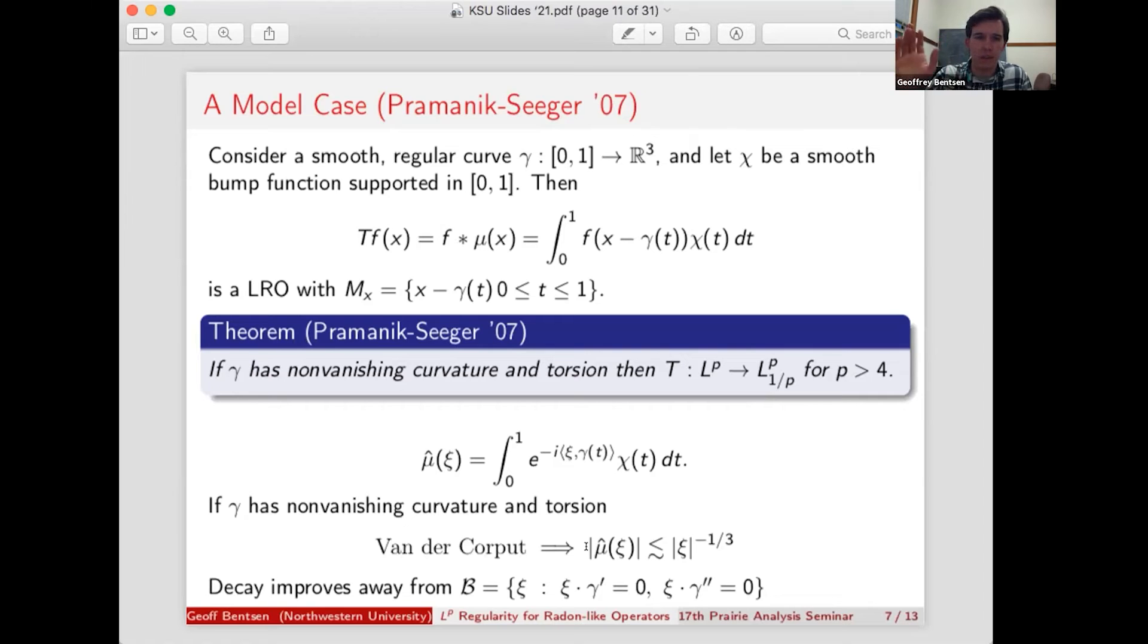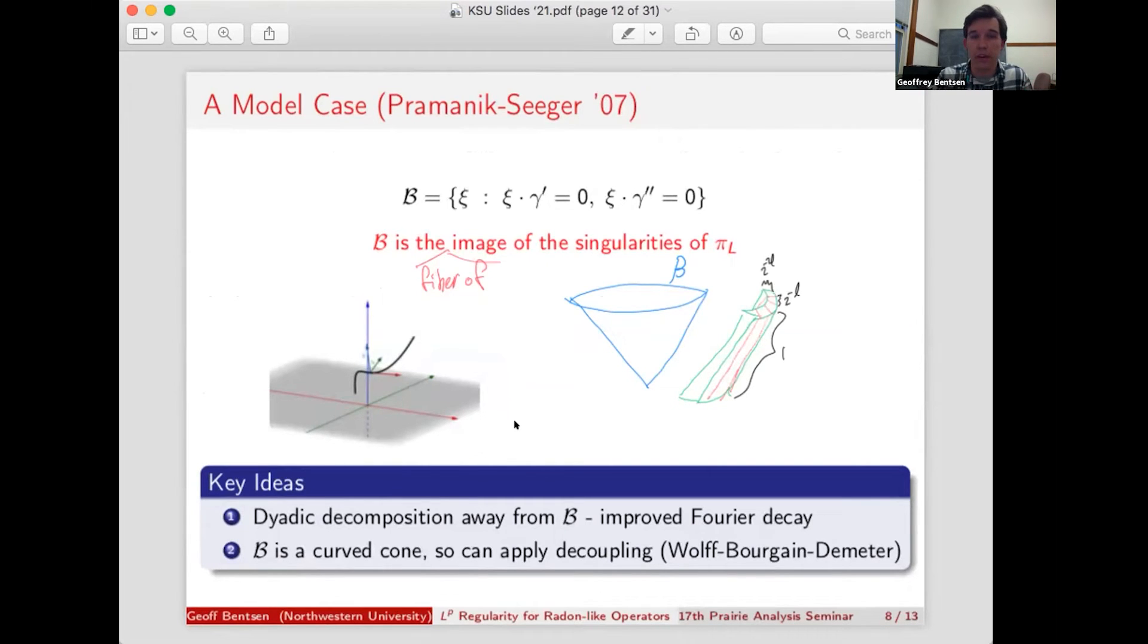But that's just a uniform bound. You have a set of bad directions where that's actually attained, but most everywhere else, you actually have better. And the set where that worst decay occurs is the set where the first two derivatives of this phase function are zero. In other words, the set of xi which are orthogonal to the first two derivatives of gamma, and put another way, the set of xi which are orthogonal to the tangent vector and the normal vector to your curve gamma. So these are termed the binormal vectors to gamma, just from the Frenet frame. And they form a curved cone, a cone with one non-vanishing principle curvature. That is, again, a basic geometry fact coming from the fact that gamma has non-vanishing curvature and torsion.